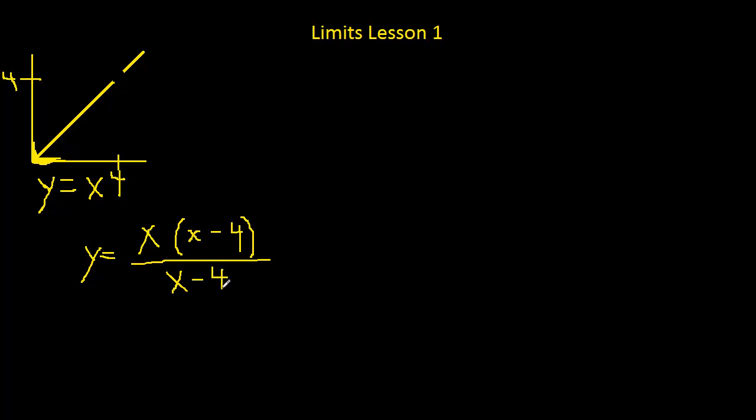Now what we have is the exact same function here if we let the x minus 4 terms cancel. We have the exact same function, but because this x minus 4 is in the denominator, we have to go back up here and clarify that this point is empty.